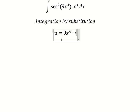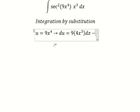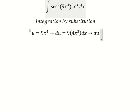We have du equals 9 times 4x to the power of 3 dx. 9 times 4 gives us 36, so because we don't have 36, we need to divide both sides by this one.